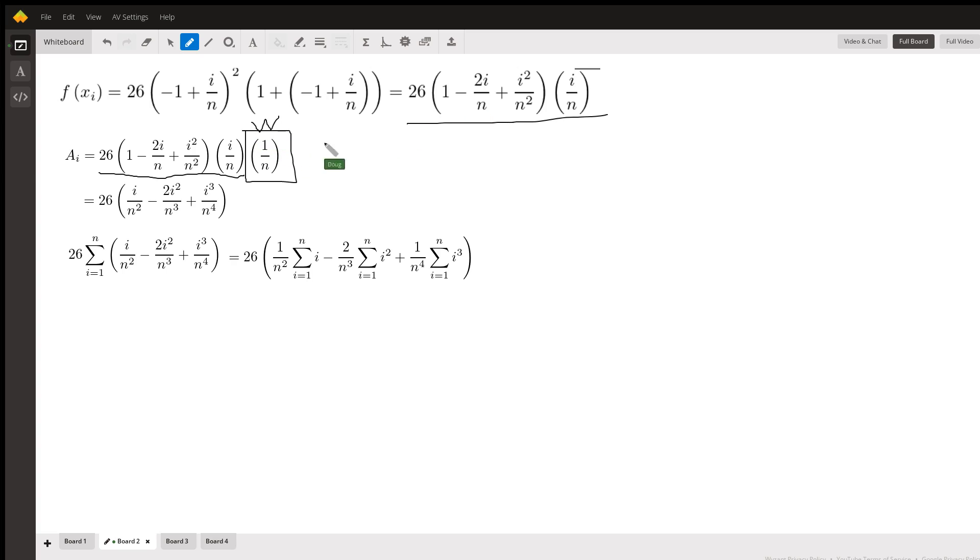If you simplify that by distributing i over n² times each term, this is what you get. So that's a formula for the area of the ith rectangle.